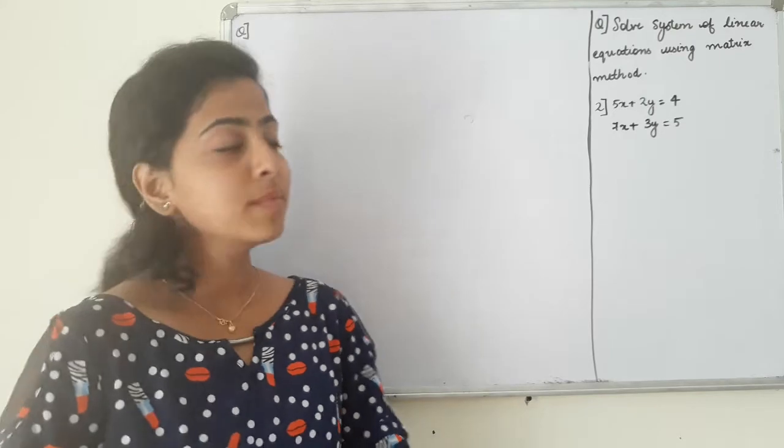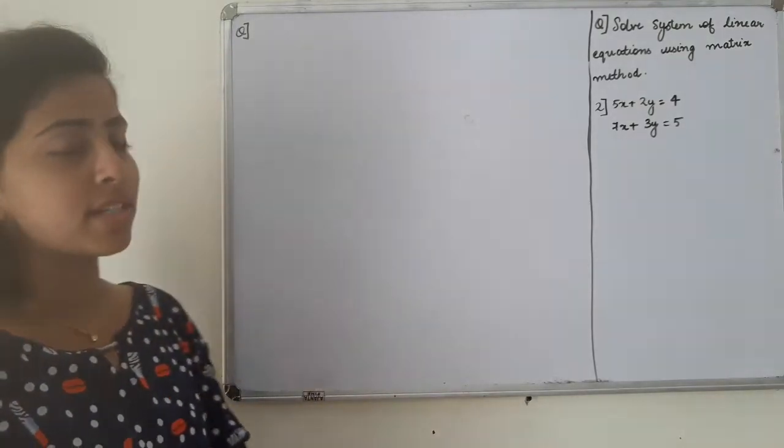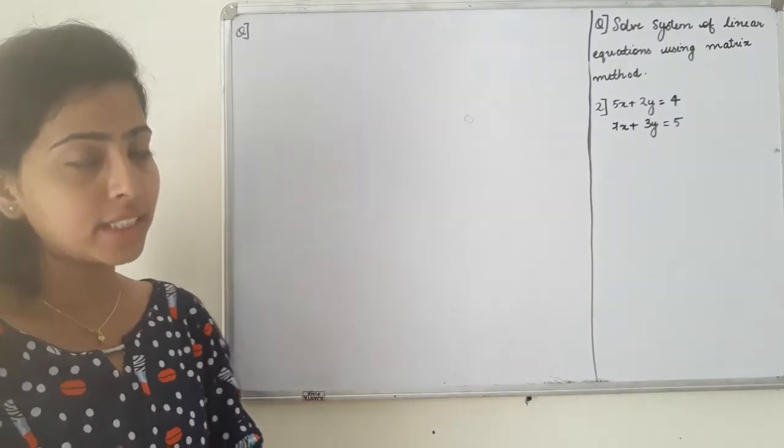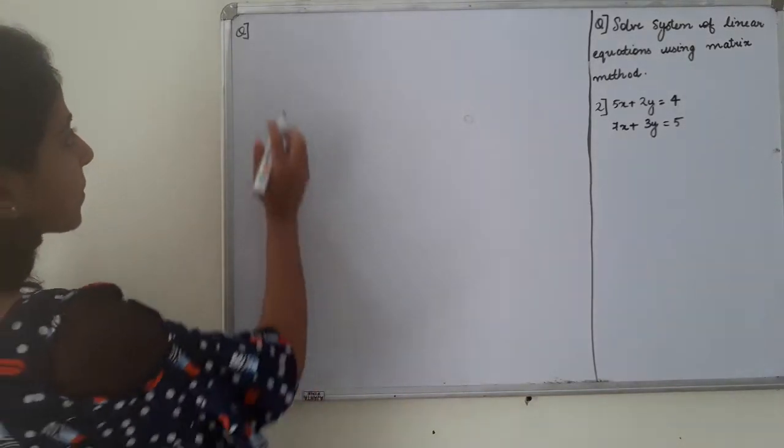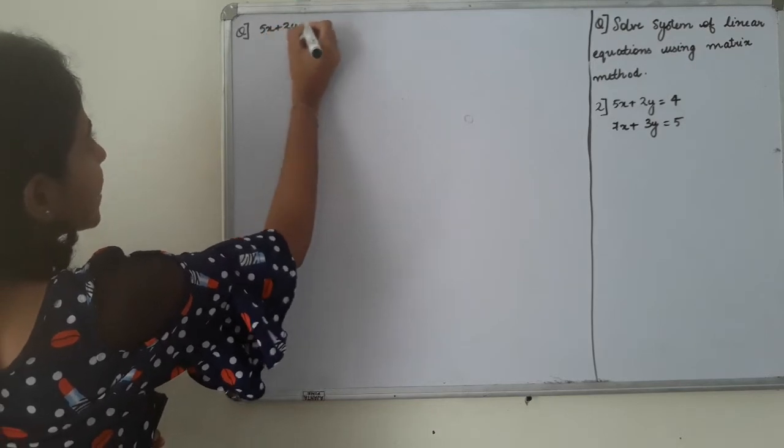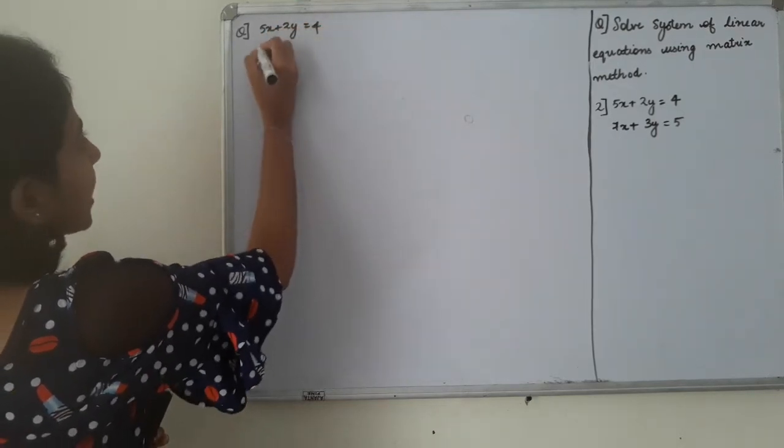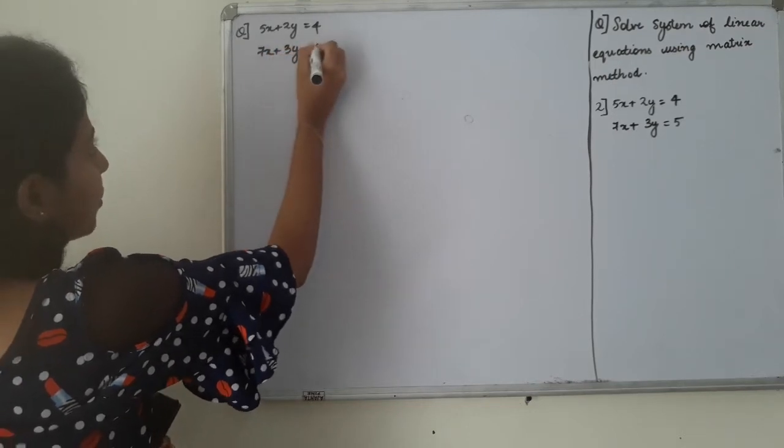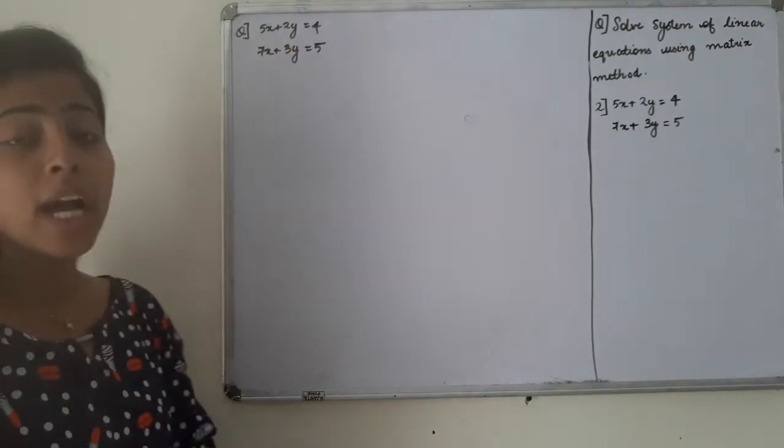We had another question. Question number 2. Solve the system of linear equations using the matrix method. We have a question: 5x plus 2y is equal to 4. Then, 7x plus 3y is equal to 5.